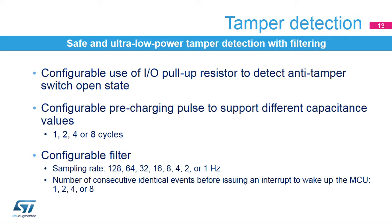The pre-charging pulse duration is configurable to support different capacitance values and can be 1, 2, 4, or 8 RTC clock signals. The pin level is sampled at the end of the pre-charging pulse. A filter can be applied to the tamper pins. It consists of detecting a given number of consecutive identical events before issuing an interrupt to wake up the device. This number is configurable and can be 1, 2, 4, or 8 events at a programmable sampling rate from 1 to 128 Hz.